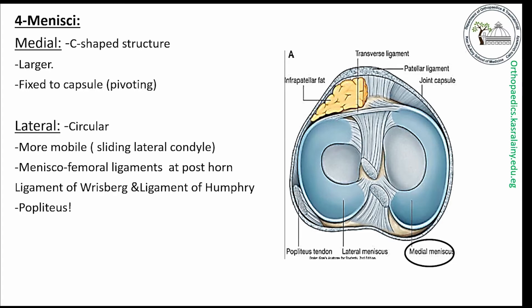The lateral meniscus is more mobile for greater motion of the lateral condyle, and has relations to the posterior cruciate ligament via the meniscofemoral ligaments — the ligament of Wrisberg and the ligament of Humphry. The lateral meniscus is separated from the lateral collateral ligament by the popliteus.